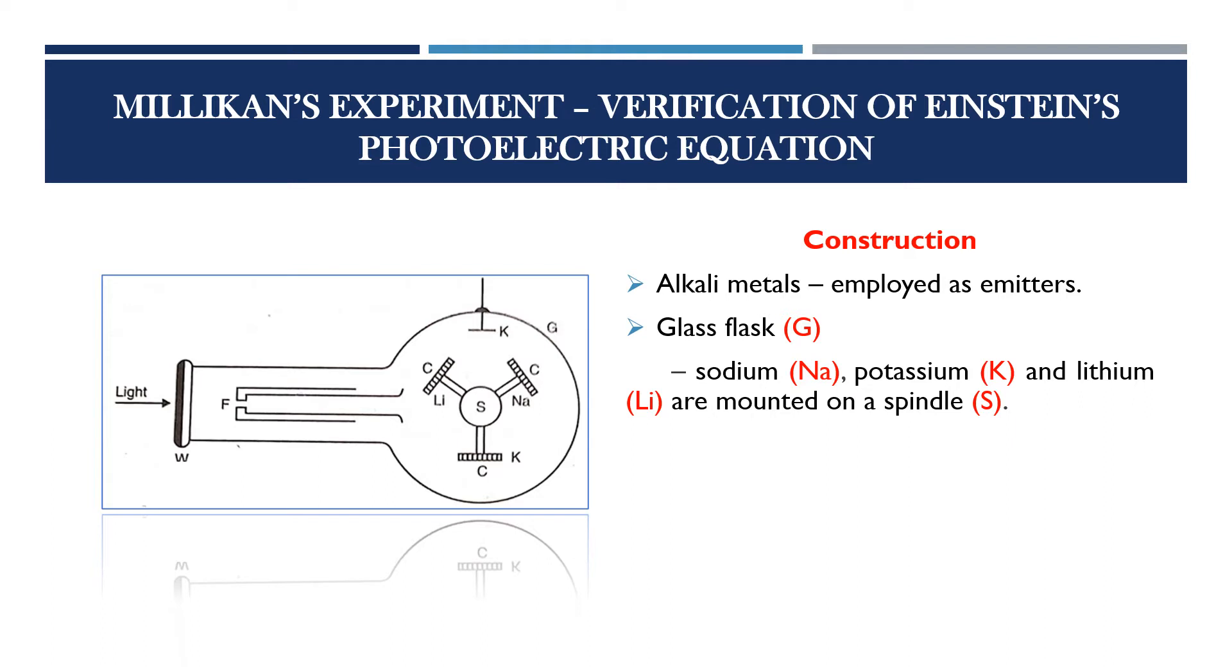The spindle can be rotated from outside by an electromagnet. As each metal block passes by an adjustable sharp edge K, a thin layer of it is removed. Thus, exposing a fresh surface of the metal to the irradiating light entering the glass through a quartz window W.